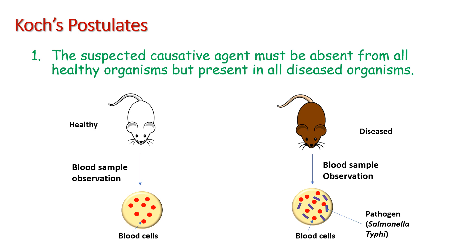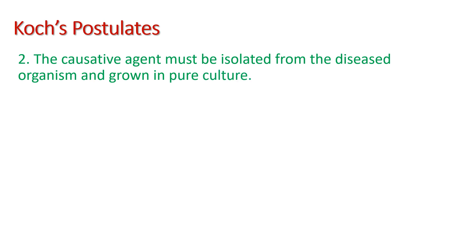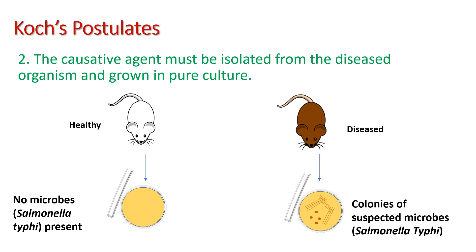So, in the case of a diseased organism, we always find pathogenic cells. The second postulate says the causative agent must be isolated from the diseased organism and grown in pure culture. A healthy organism does not have any Salmonella typhi cells in its body, so when we culture its sample on a particular agar media or liquid media, no microbes can be seen. But we get isolated pure colonies of Salmonella typhi when a sample from a diseased organism is cultured on particular agar media.